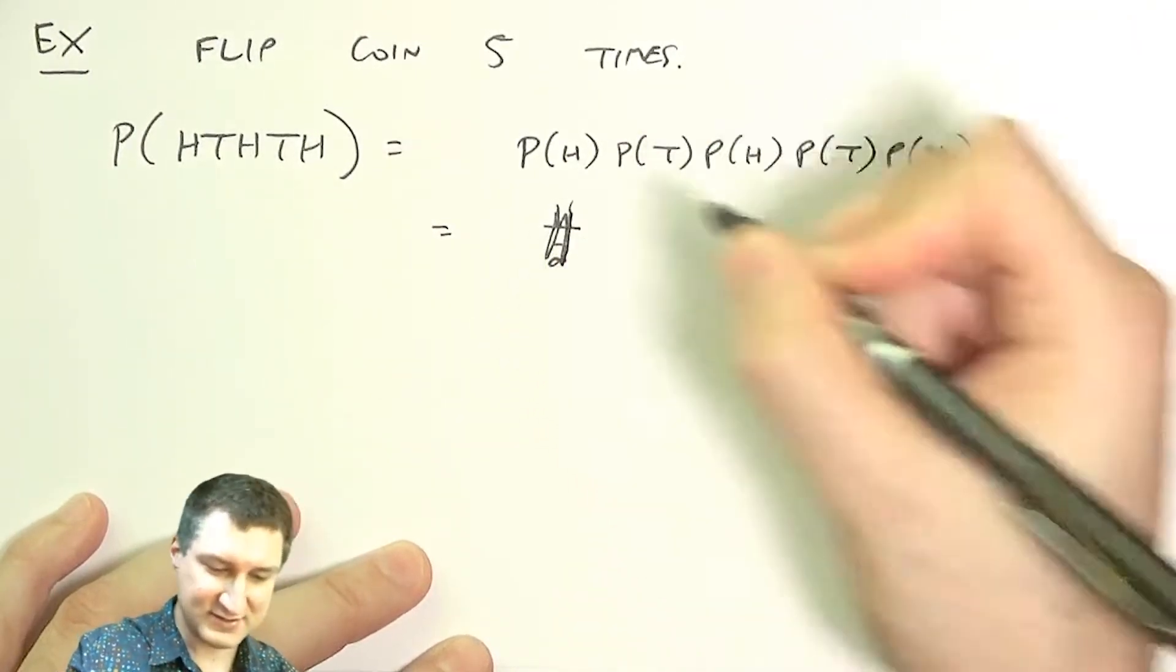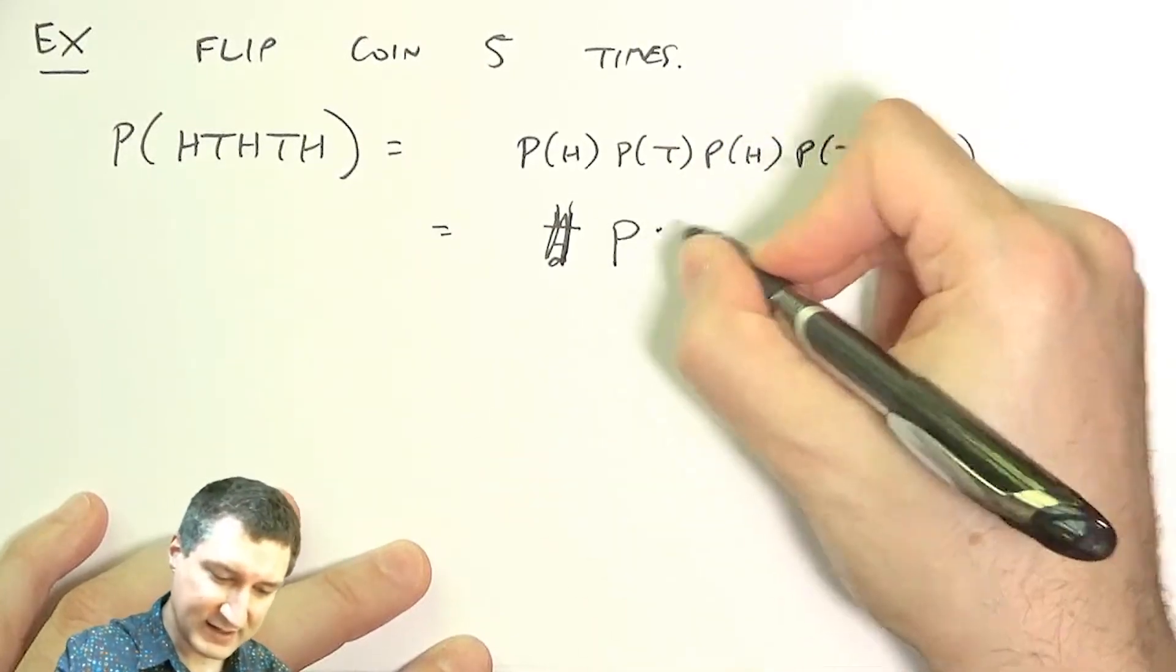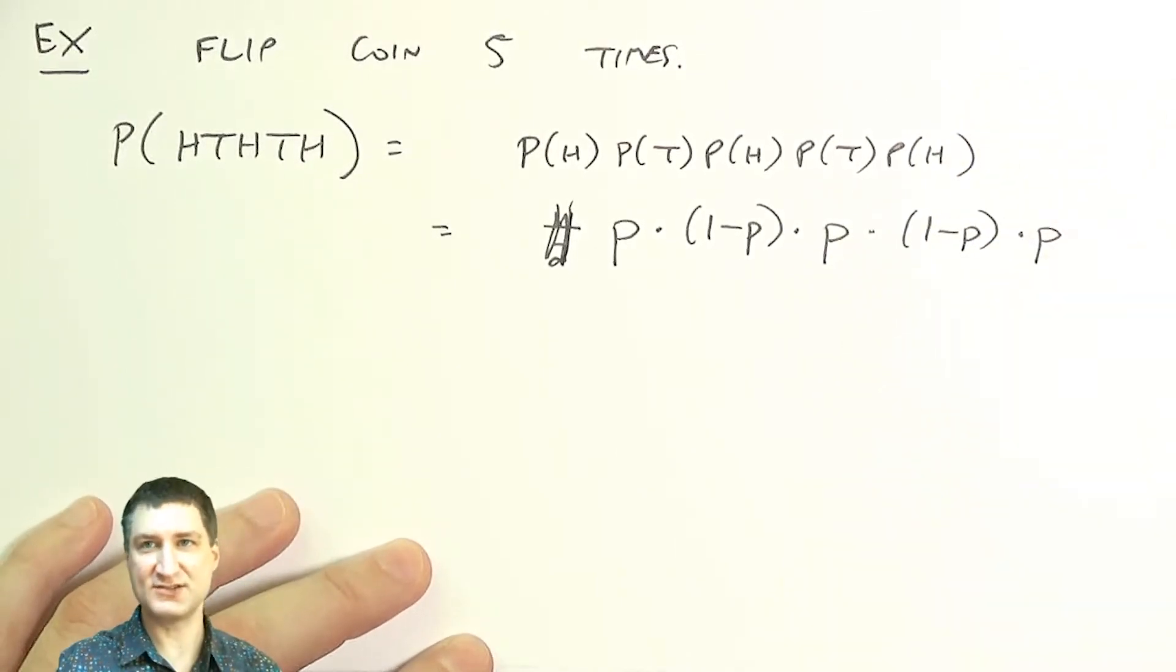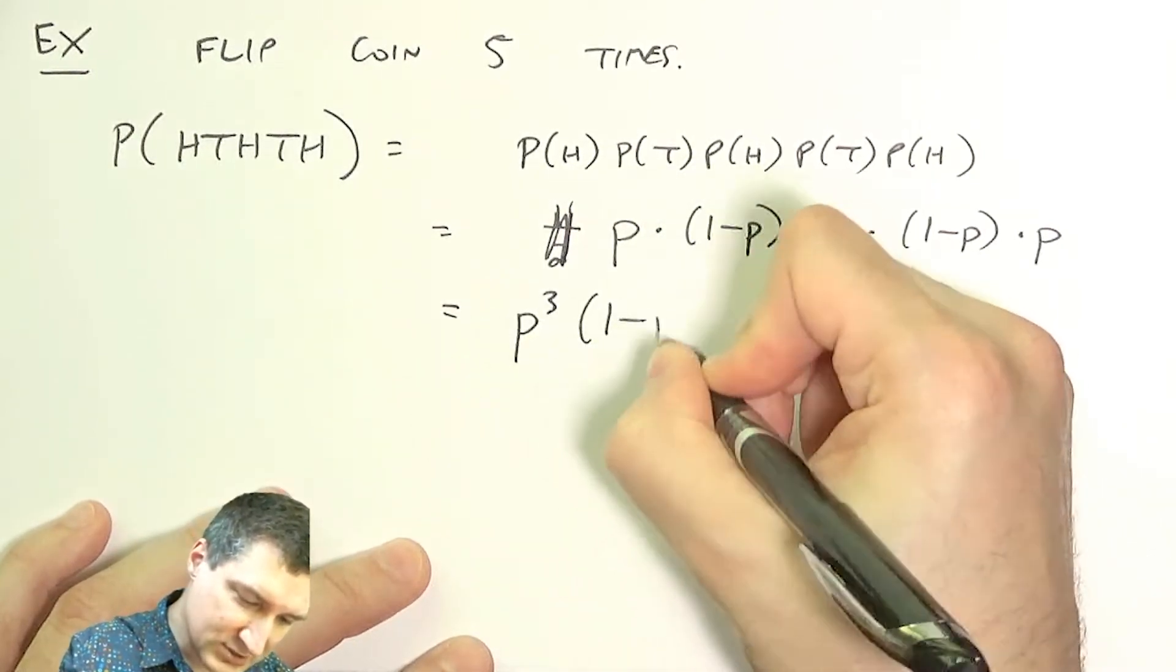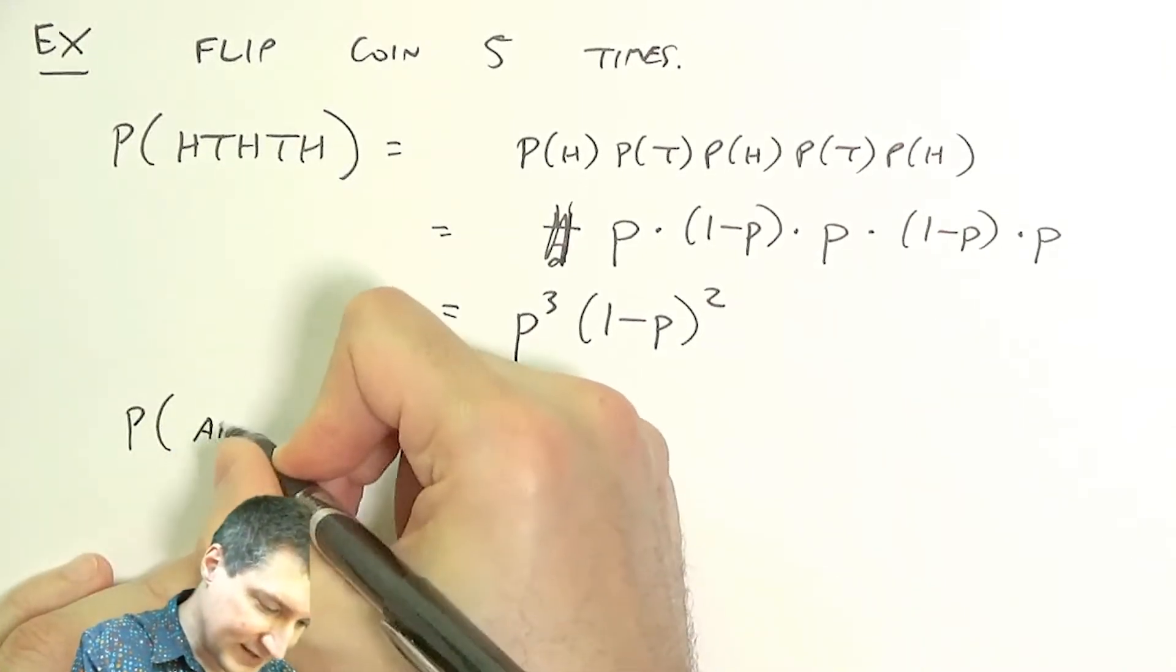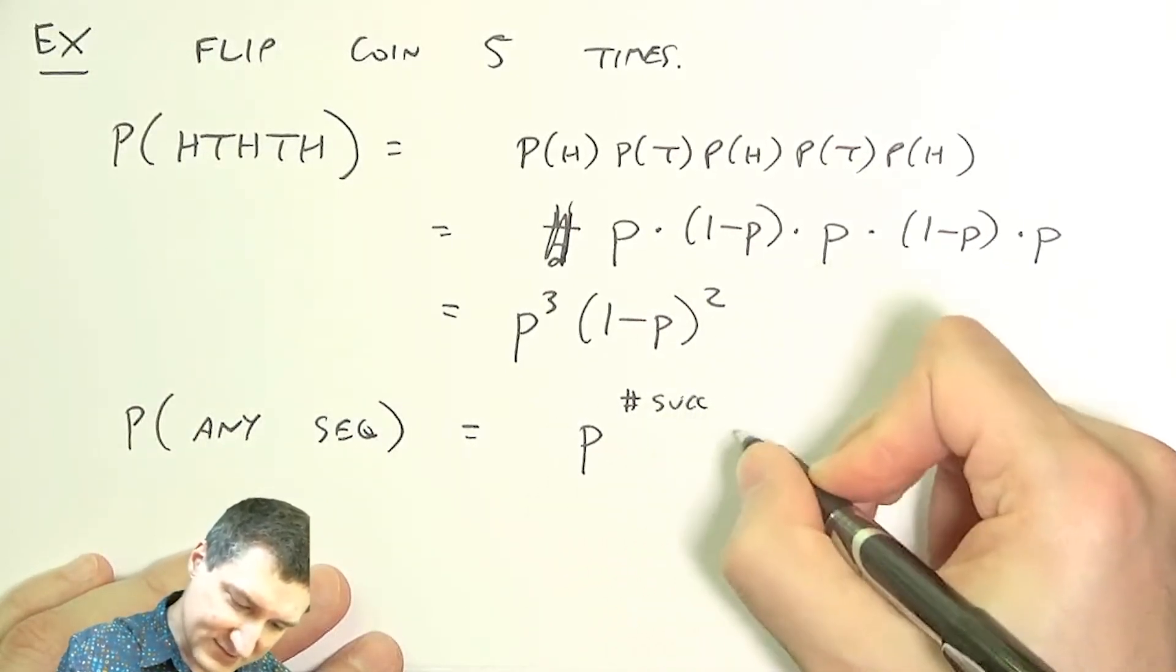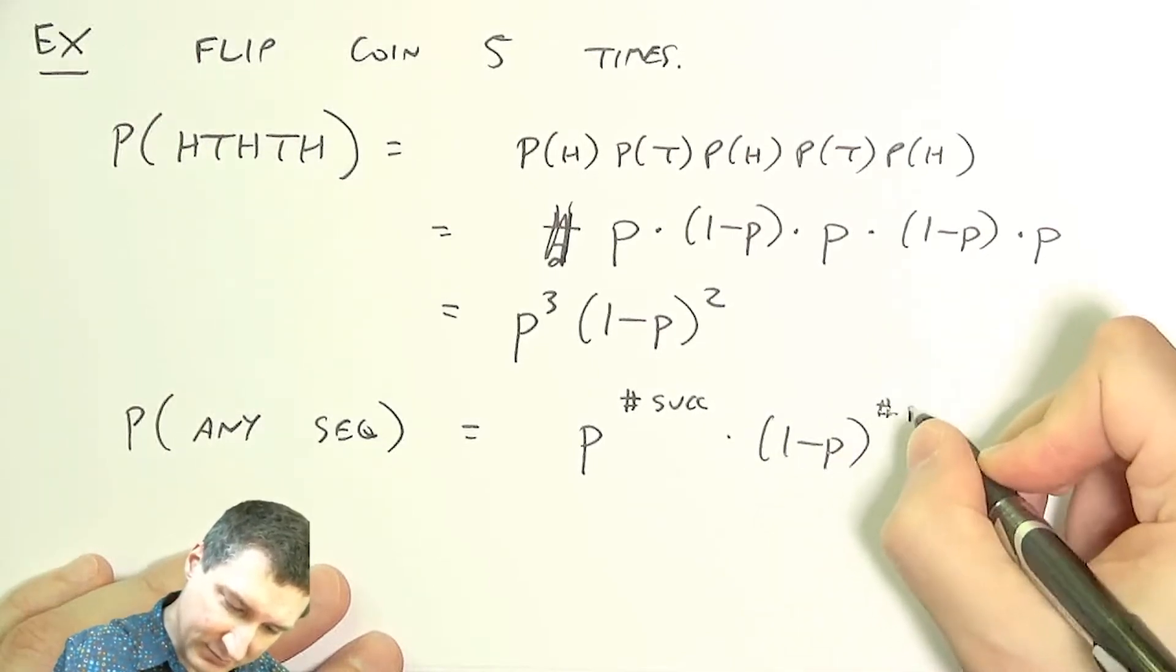Let's assume that the probability of getting a head is p. In this case, I have three successes and two failures, so my result is p cubed times one minus p squared. In general, the probability of getting any given sequence is p to the number of successes times one minus p to the power number of failures.